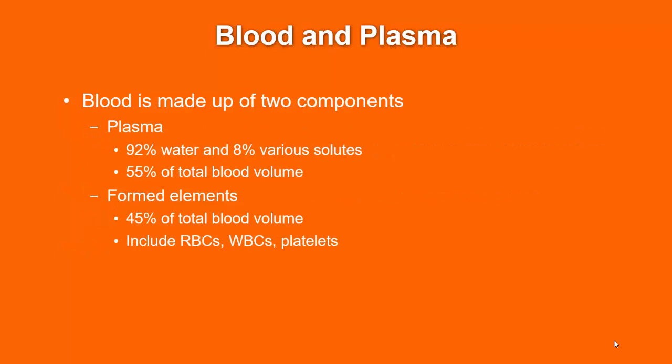Plasma is 92% water and 8% various solutes, making up 55% of the total blood volume. The formed elements account for 45% of total blood volume and include red blood cells, white blood cells, and platelets. Red blood cells are also called erythrocytes, white blood cells are also called leukocytes, and platelets are also called thrombocytes. Of these formed elements, 99% are red blood cells.